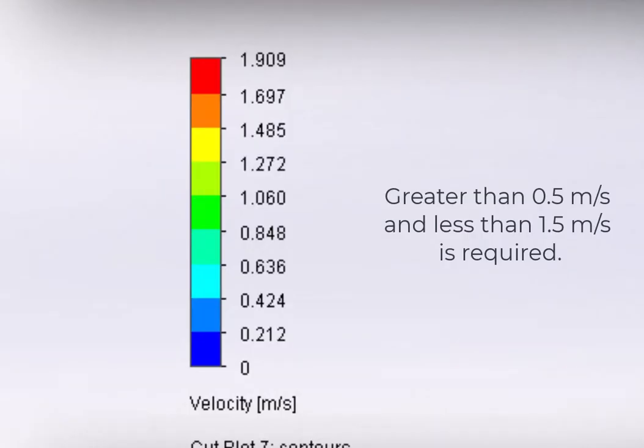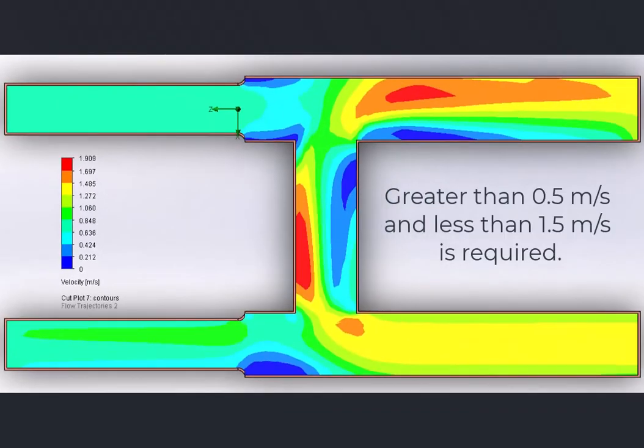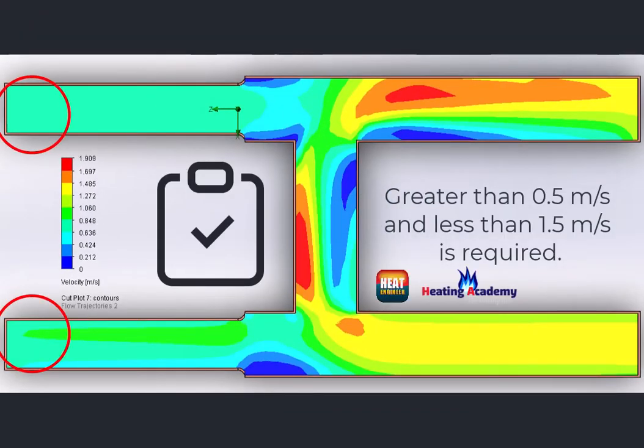So colours from light blue to yellow is what we really want to aim for from the flow return from the boiler and also the flow return from the underfloor heating system, which we've got here. So this is an acceptable velocity for this particular system.